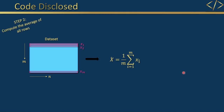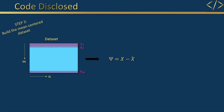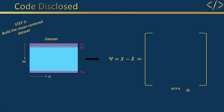The second step is to compute the average of all rows — you sum all rows and divide by the number of rows, calling it x-bar. The third step is to build the mean-centered dataset, which I'll call psi. Psi equals X minus x-bar, so your original dataset minus the row average. Basically, I'm shaping my dataset as a Gaussian with a mean of zero. Each row is now psi1, psi2, up to psi m — the data minus the mean.